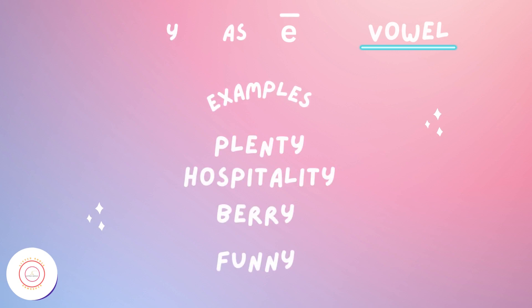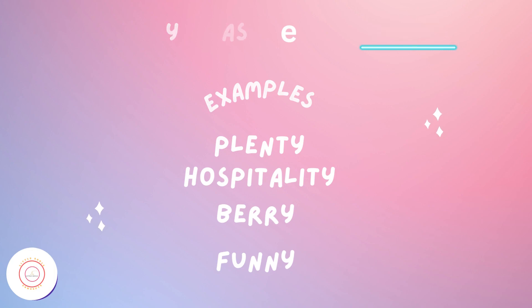Y also says the IH sound at the end of a two or multi-syllable word. For example, plenty. It is a two-syllable word and Y is saying IH at the end of this word. Plenty. Other examples can be hospitality, berry, funny.